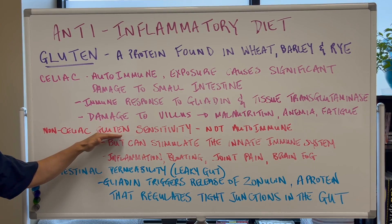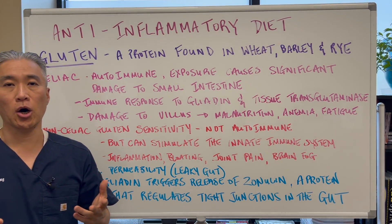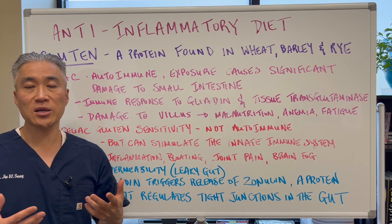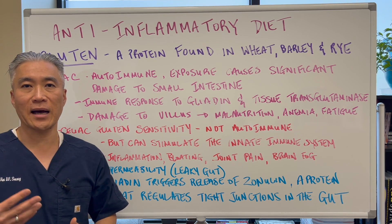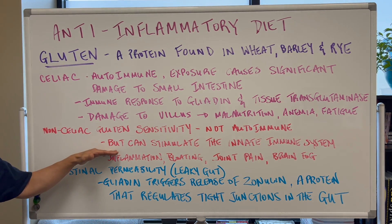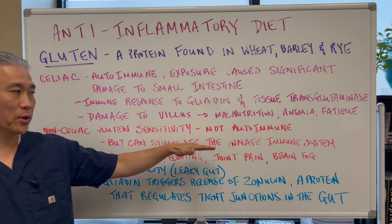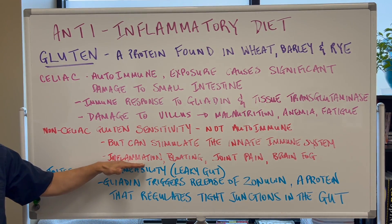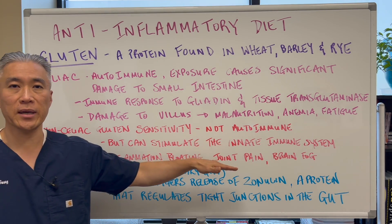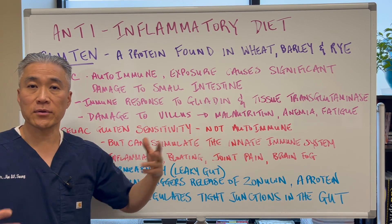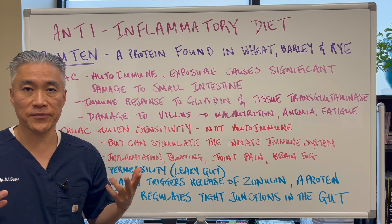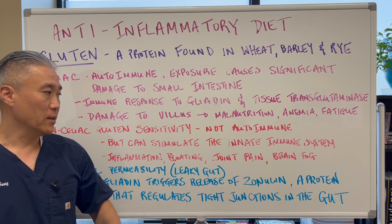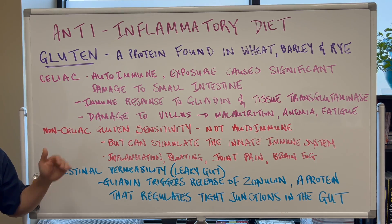Non-celiac gluten sensitivity is not an autoimmune condition, but these patients tend to have similar symptoms, maybe not as severe. It can stimulate what we call the innate immune system and cause inflammation, bloating, joint pain, and even brain fog. So if you have gluten exposure and all of a sudden you feel foggy or your concentration is not as good, you may actually have an issue with gluten.